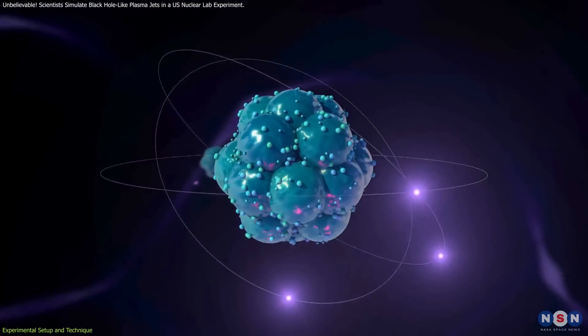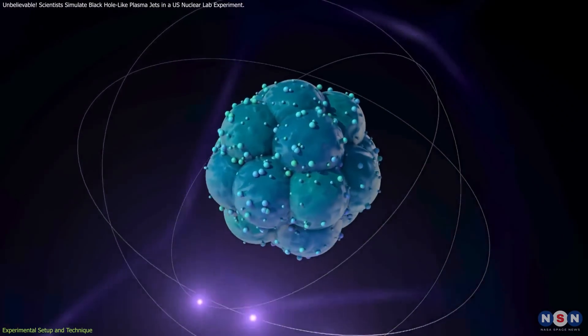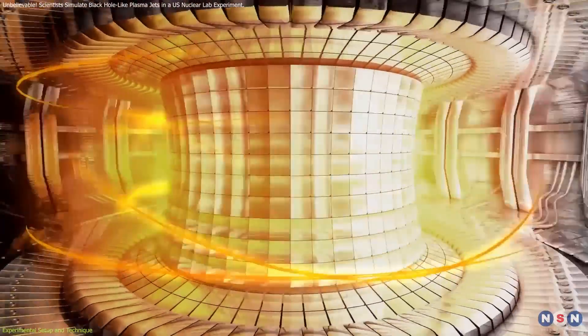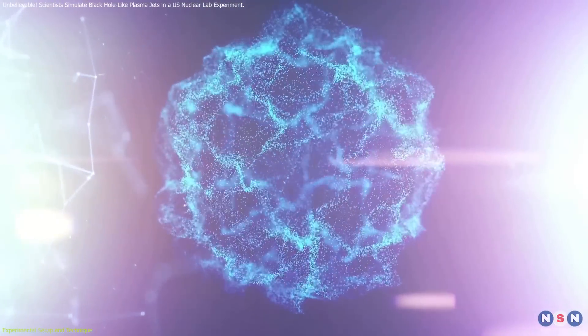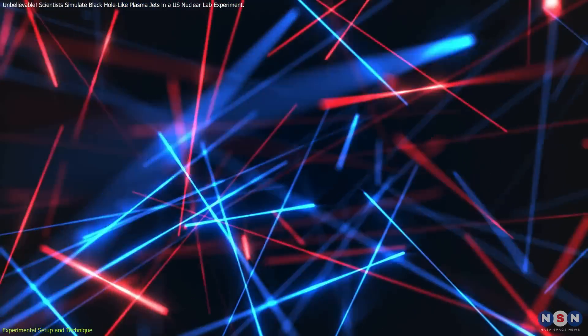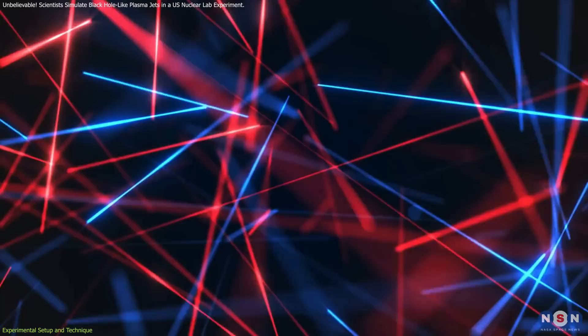One key breakthrough was a new variation of proton radiography, which uses protons, subatomic particles, to create detailed images of these interactions. Researchers generated plasma by shining a powerful laser at a small plastic disk and produced protons by aiming 20 lasers at a capsule containing hydrogen and helium atoms. This intense heat triggered fusion reactions, releasing bursts of protons and X-rays.